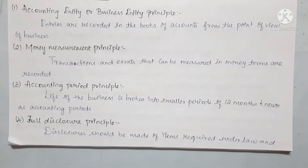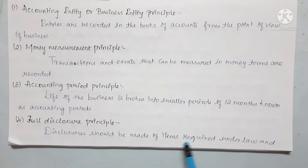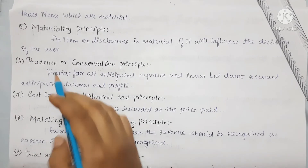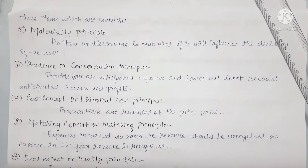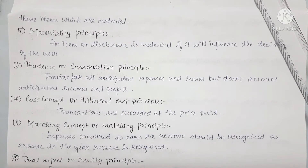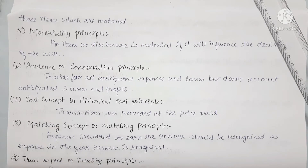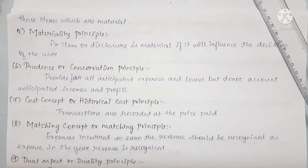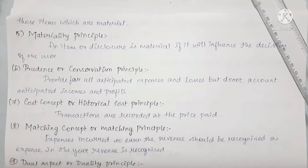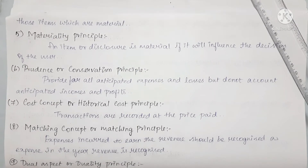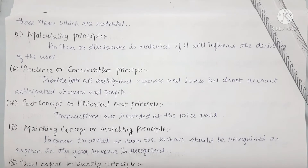Next we will see the full disclosure principle. Full disclosure means all information should be true and fair. The disclosure should be made of items required under law, items that are material, and everything that external users need to know. The purpose is to communicate complete and understandable reports to users.